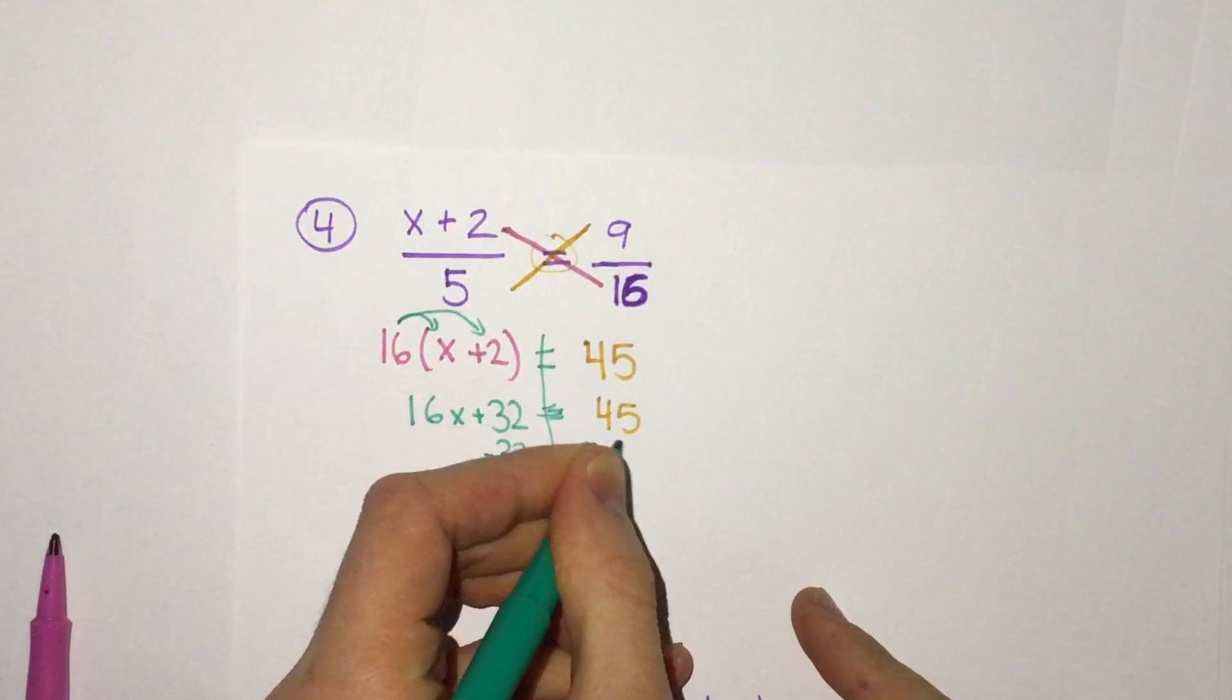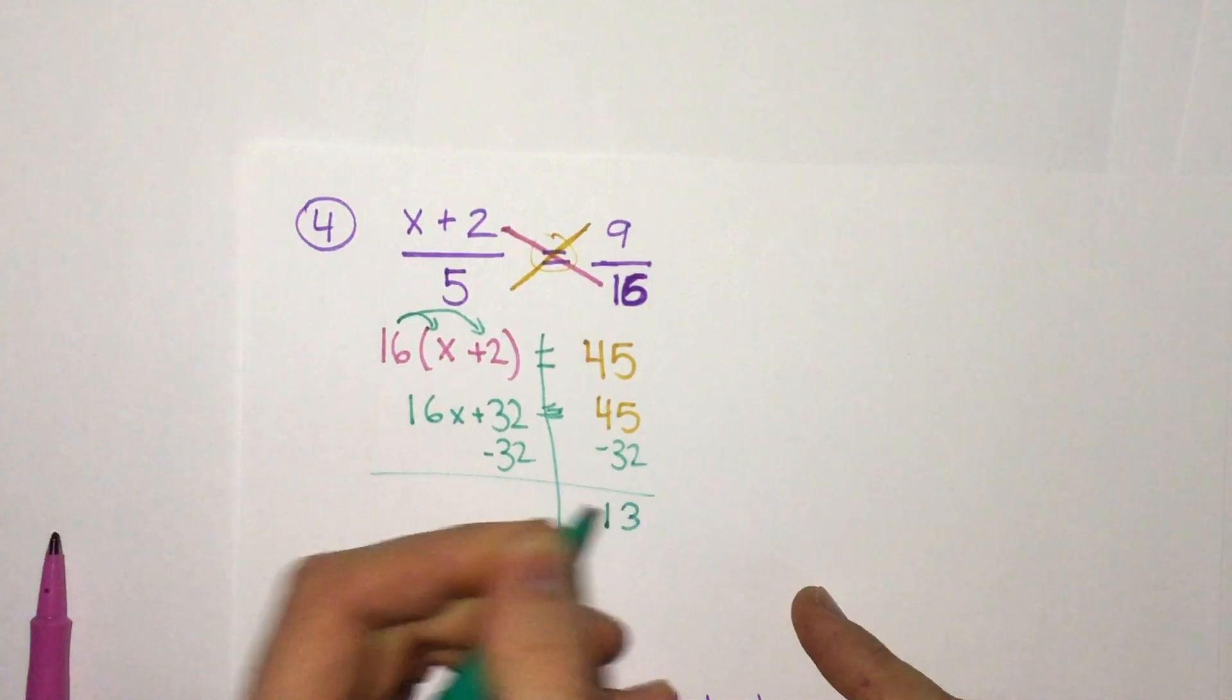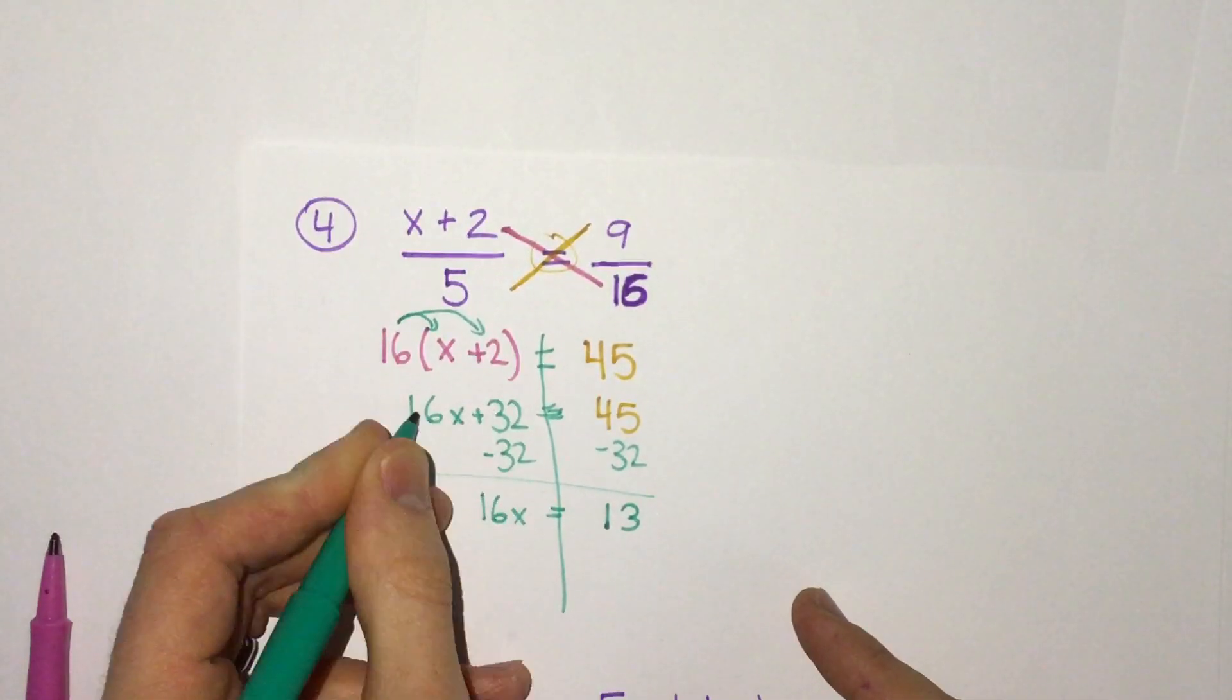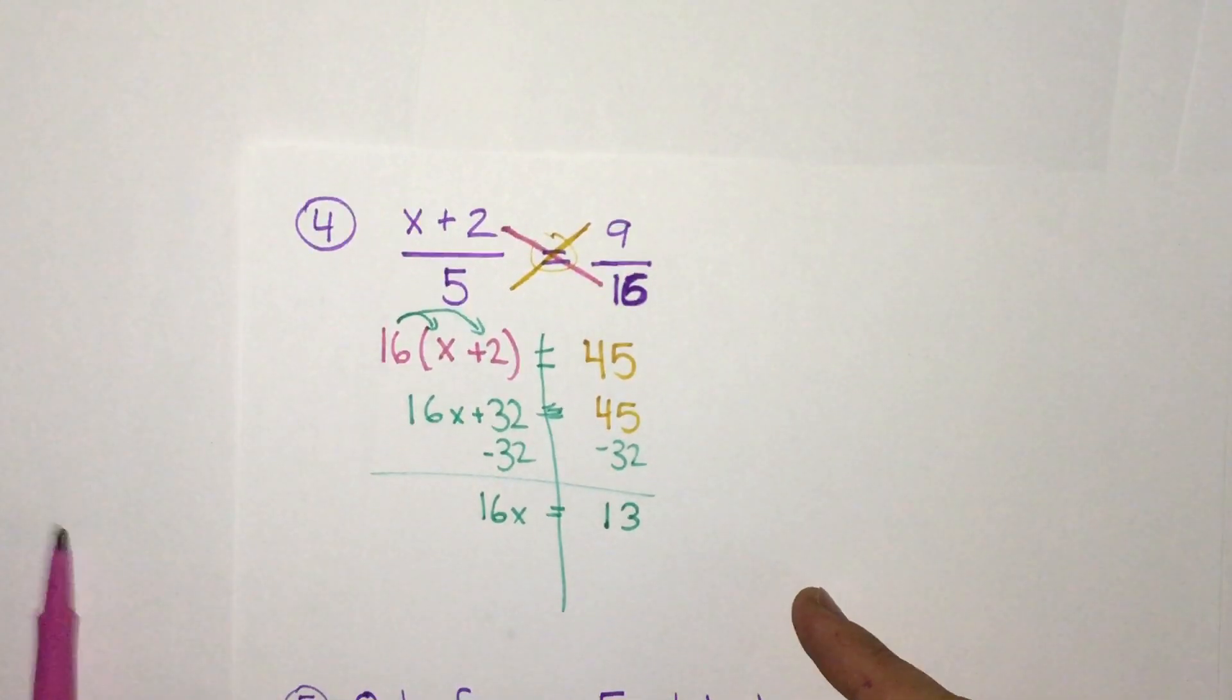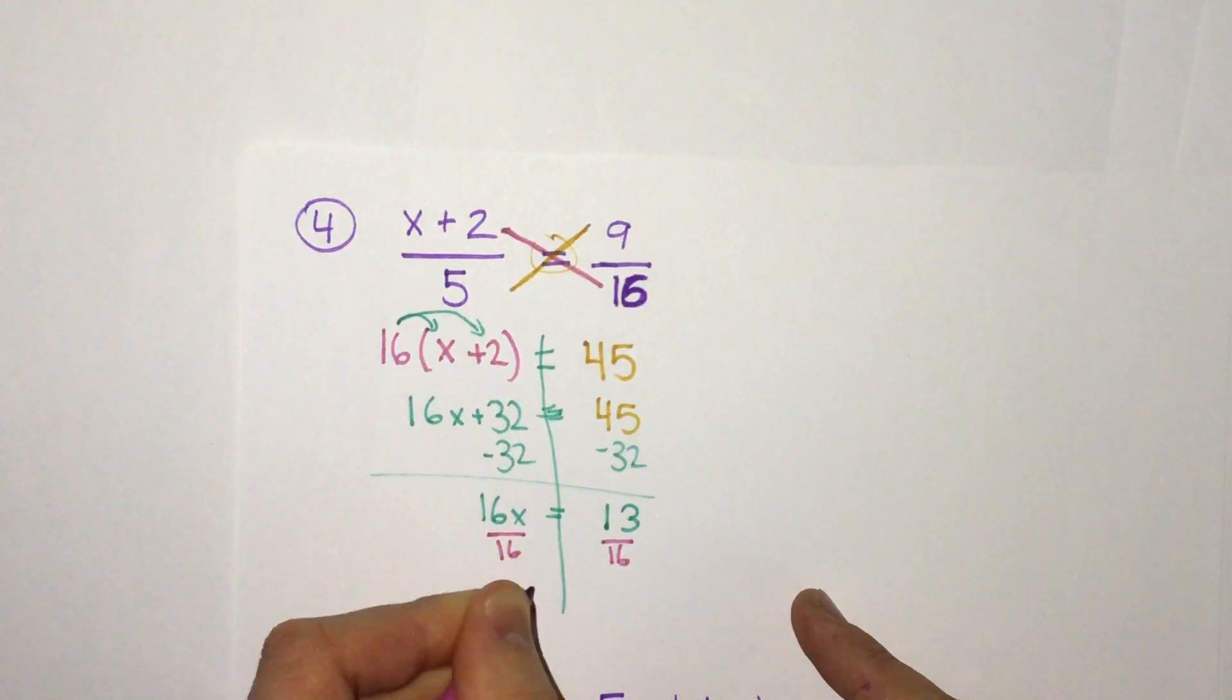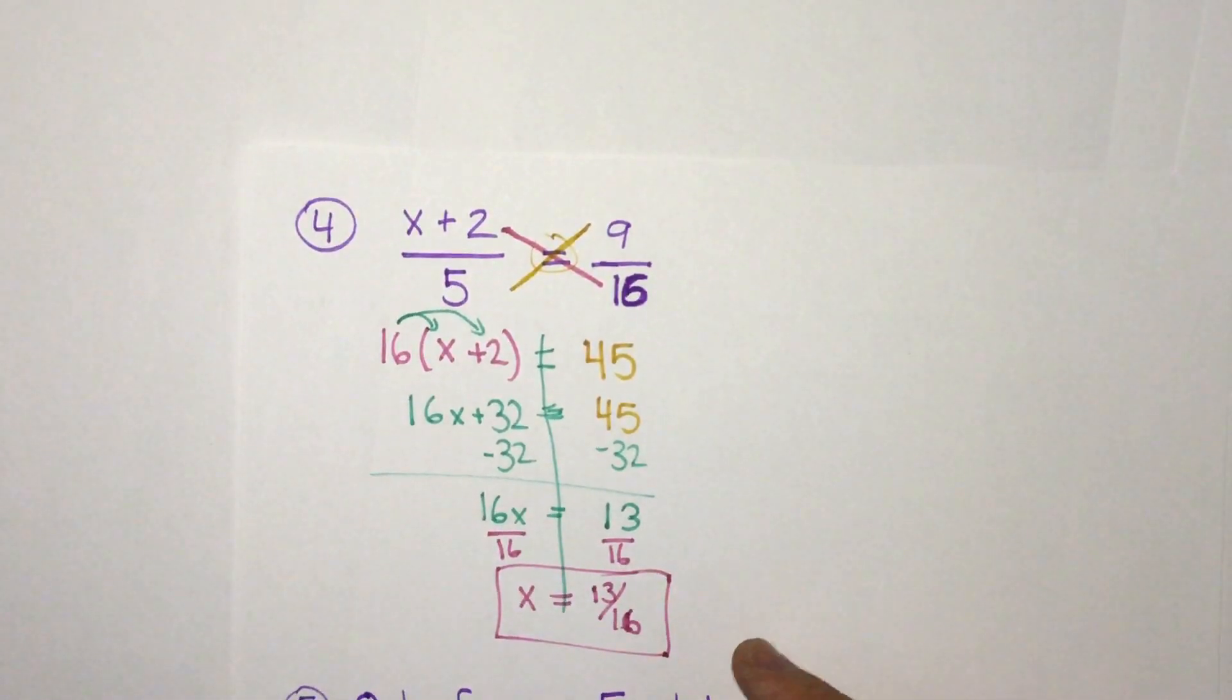Subtract 32. 45 minus 32 is 13. And we have that equals 0 plus 16x. Here we'll divide by 16. We get x equals 13 sixteenths. And again, we can leave it like that or put it as a decimal, but this would be our answer.